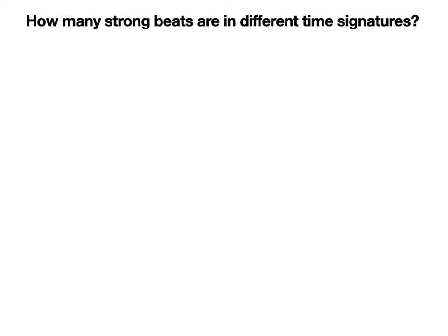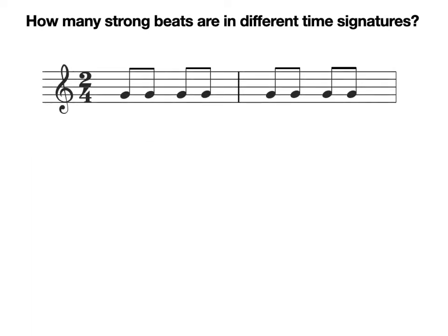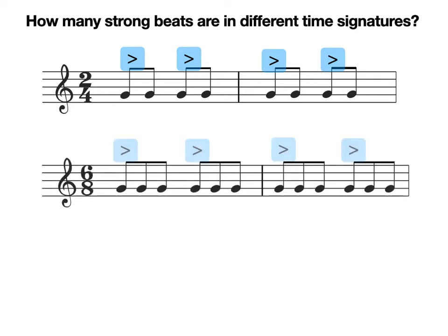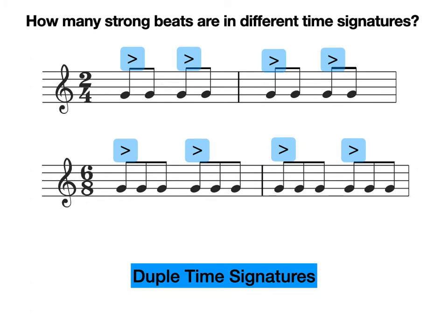So how many strong beats are in different time signatures? Let's take a look at the time signature below. How many strong beats can you see in each bar? That's correct, you can see two strong beats in each bar. Let's take a look at another time signature. Both of these time signatures are examples of duple time signatures. A duple time signature has two strong beats in each bar.